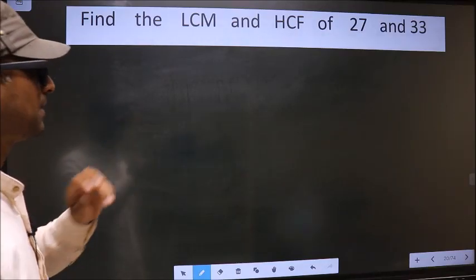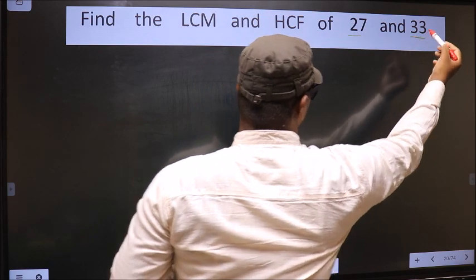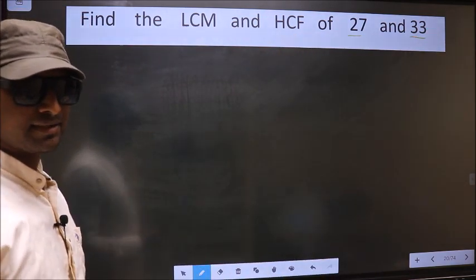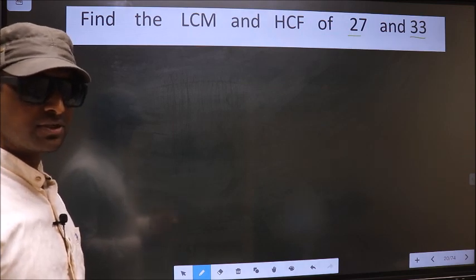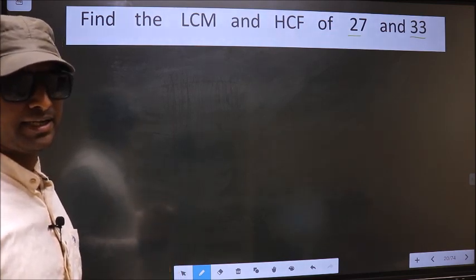Find the LCM and HCF of 27 and 33. To find the HCF and LCM, first we should do the prime factorization of each number separately.